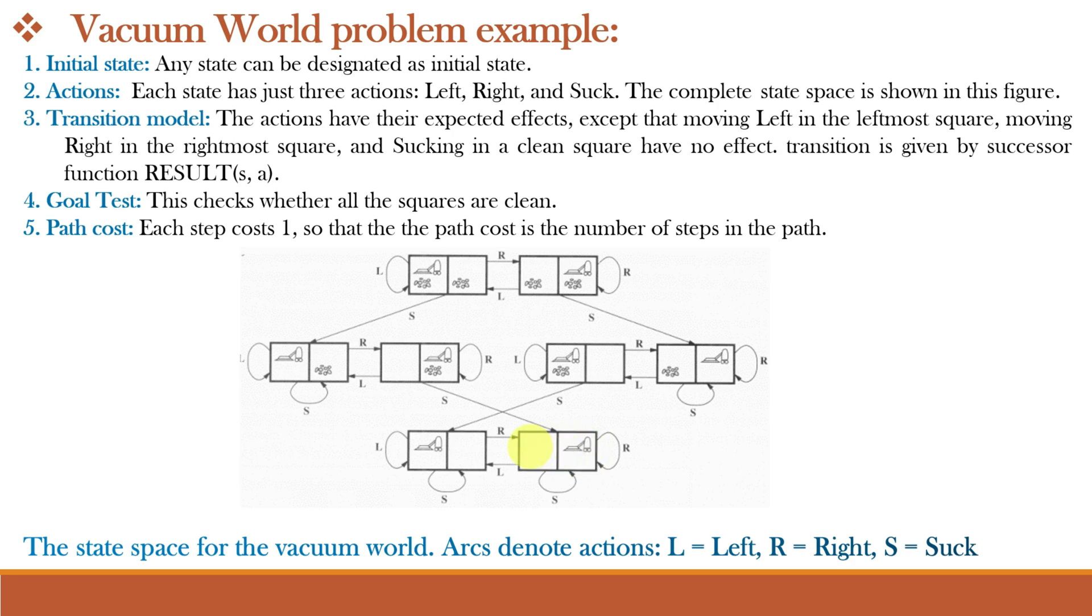Now the vacuum cleaner or the agent has reached its goal state because both the squares are clean or both the locations are clean. And conversely if we choose this as the initial state, this will be the path that will be followed for achieving the goal state. This is how the state space representation for vacuum world is drawn.